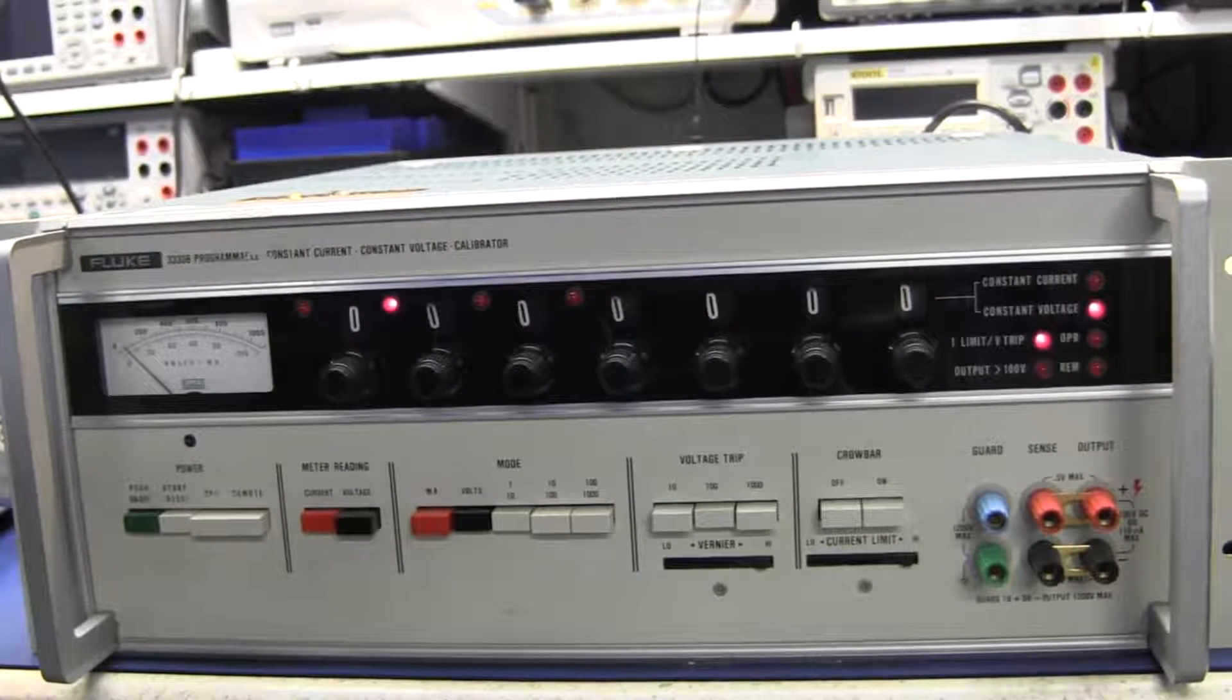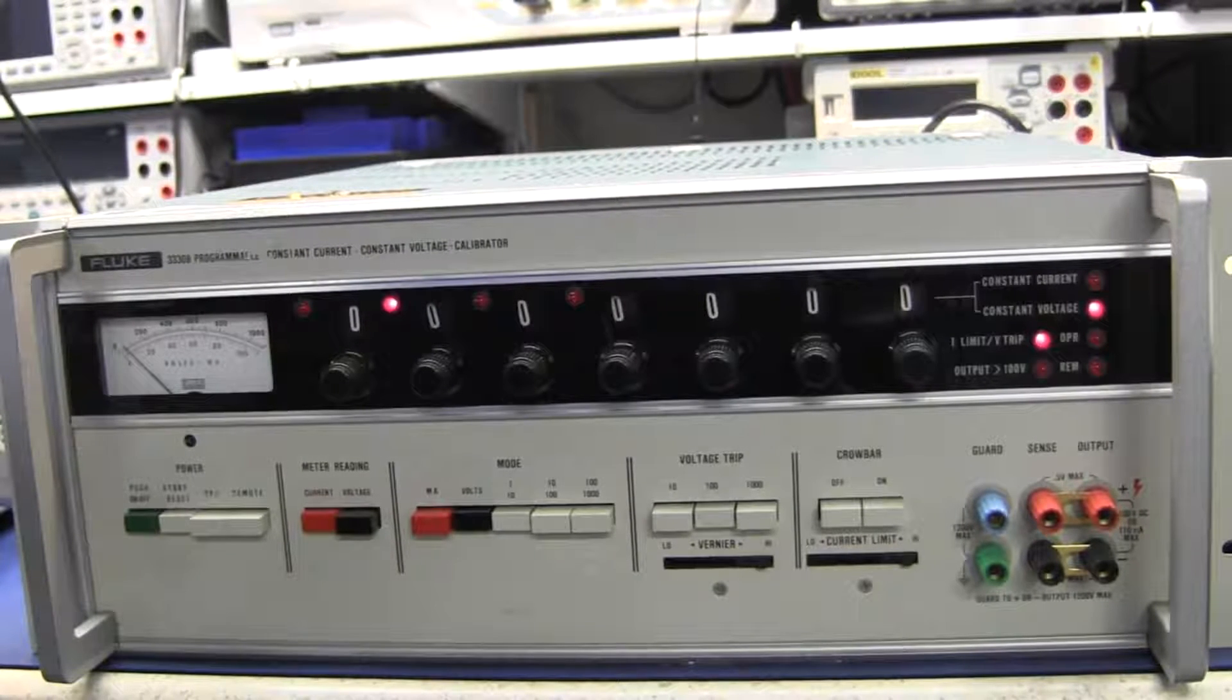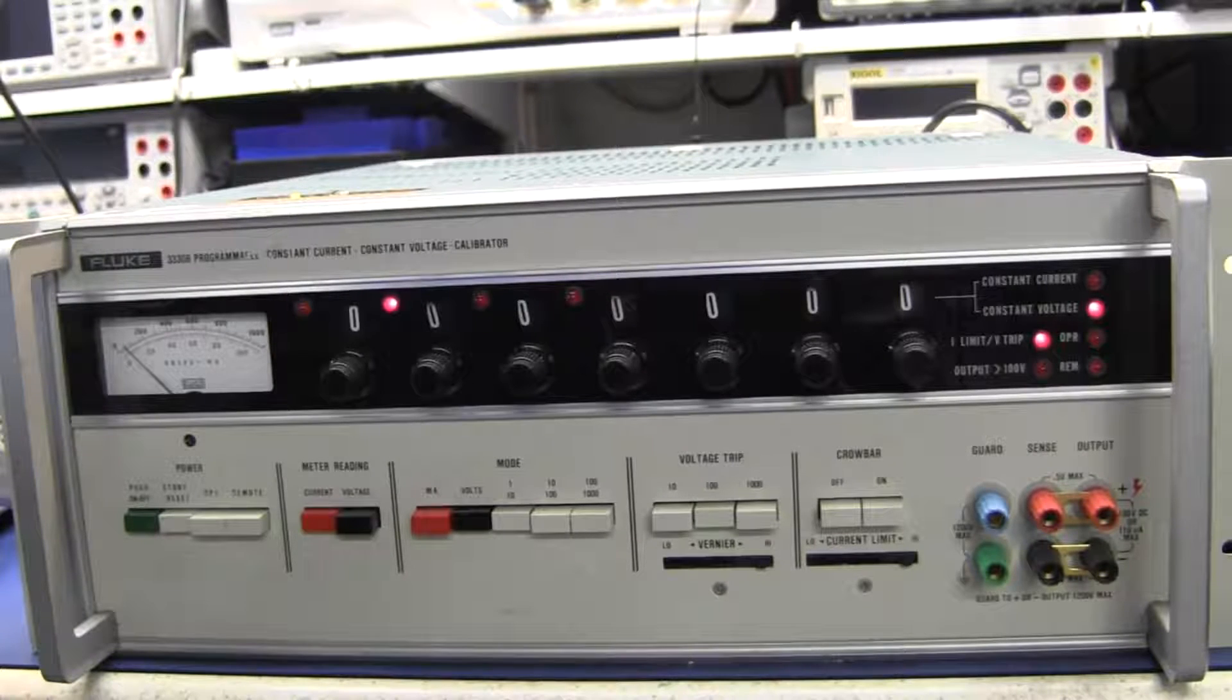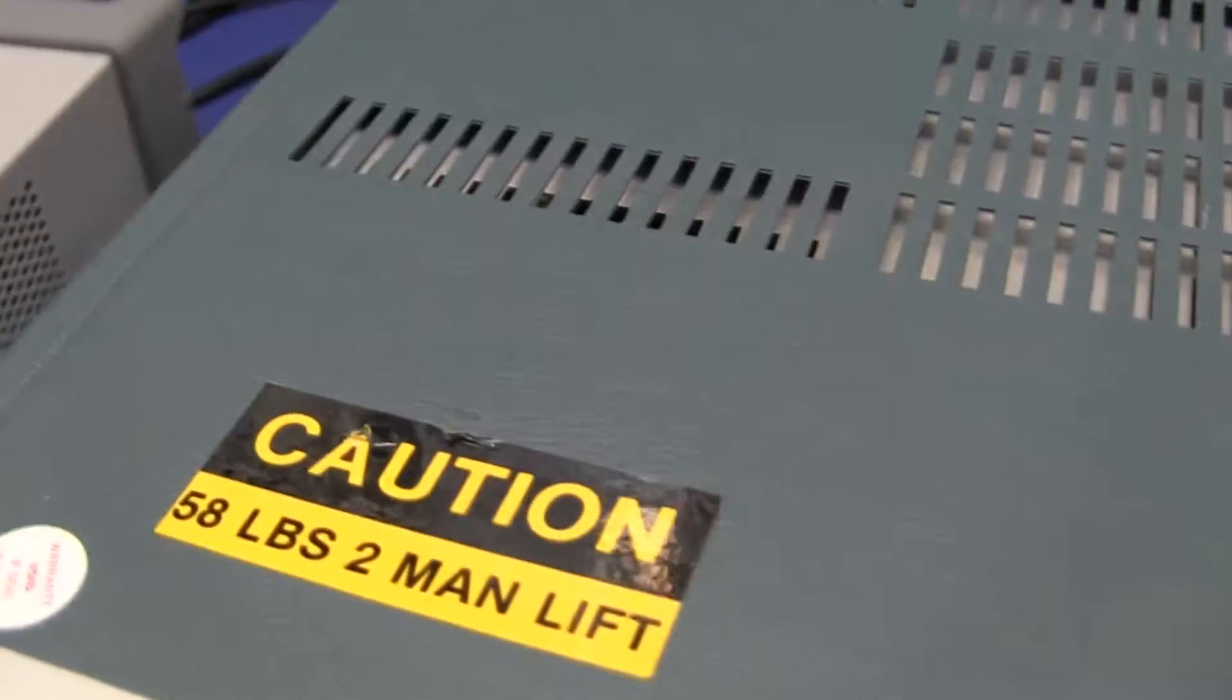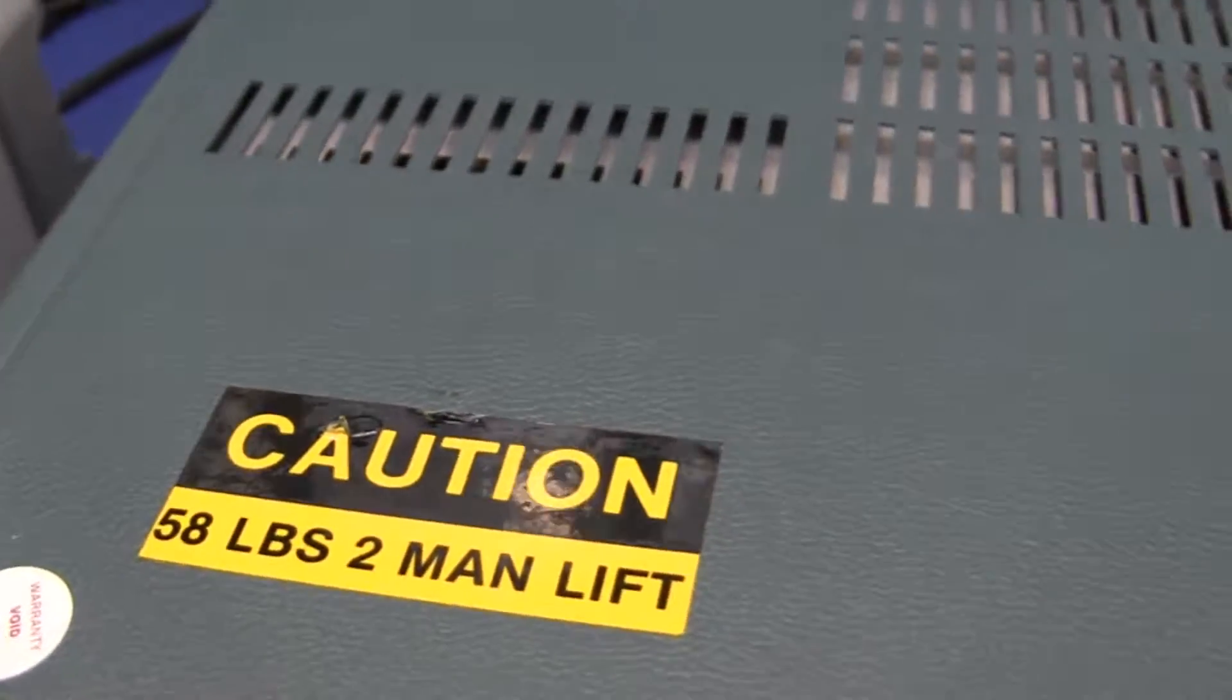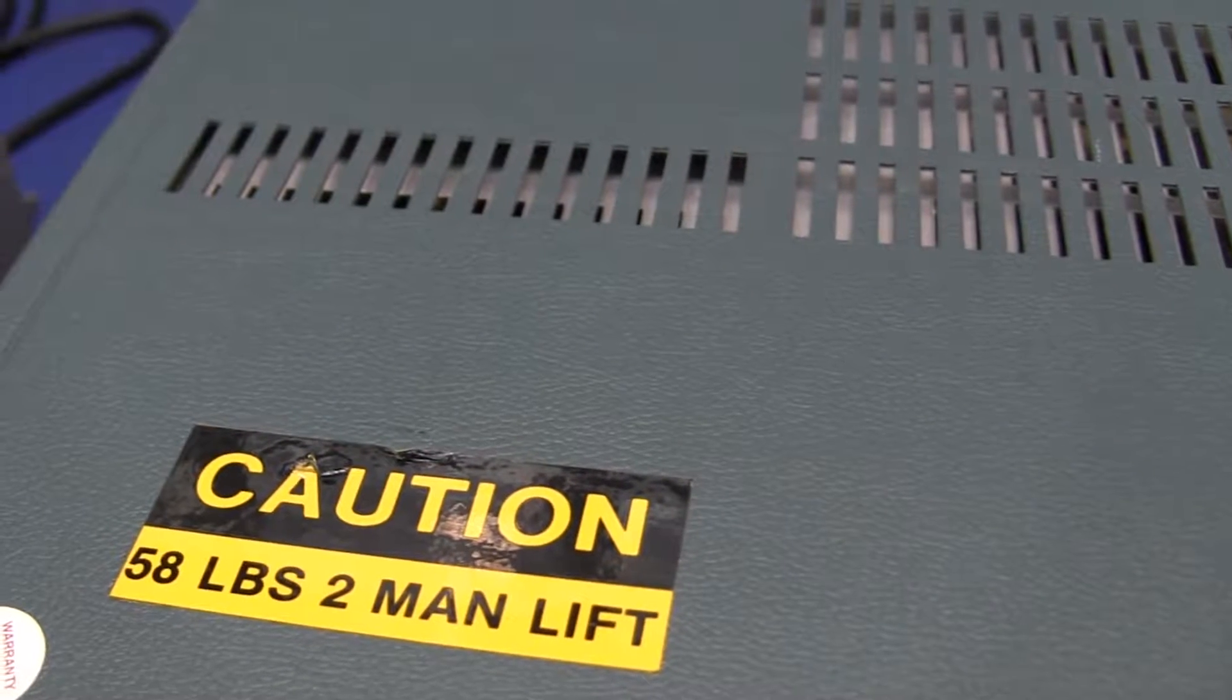For this next set of tests, we're going to need an additional piece of equipment. In this case, a Fluke 3330B calibrator. Now, we don't get this thing out too much, at least not off of its place on the shelf, for the obvious reason. Two-man lift.